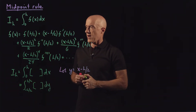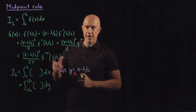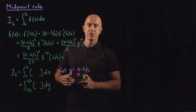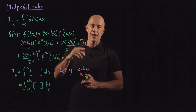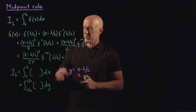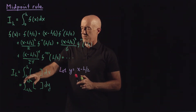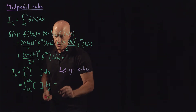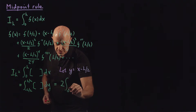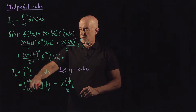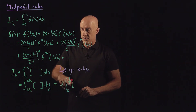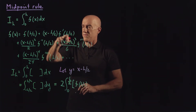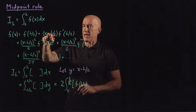At this point we can simplify because this is an integral over a symmetric interval from minus h over 2 to h over 2. All the odd powers of y will go to 0 — the integral of an odd function over a symmetric interval equals 0. All the even powers of y give an integral from 0 to h over 2 multiplied by 2. So from minus h over 2 to h over 2, we get twice the integral from 0 to h over 2, and we have f of h over 2.